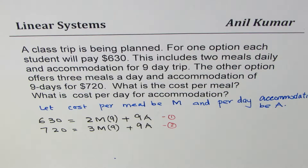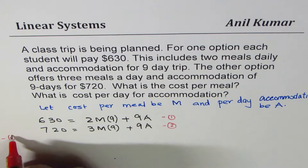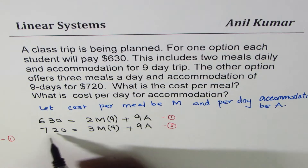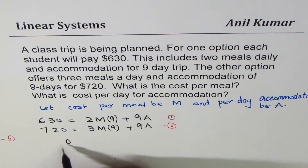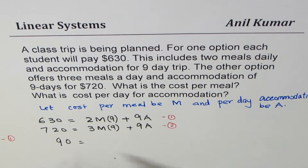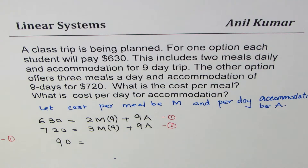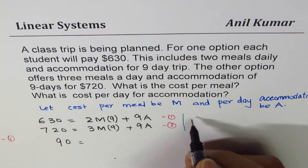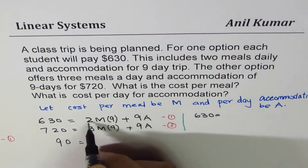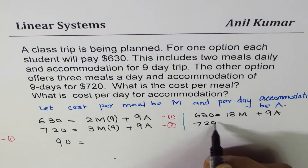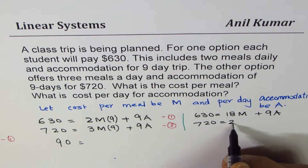Let me rewrite the equations clearly. Equation 1: 630 = 9 × 2m + 9a, which is 18m + 9a. Equation 2: 720 = 9 × 3m + 9a, which is 27m + 9a. We'll do equation 2 minus equation 1: 720 minus 630 gives us 90 on the left side.